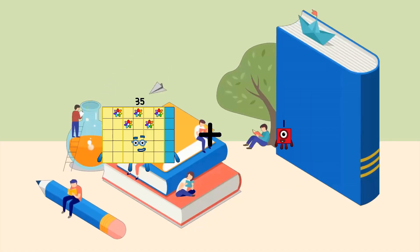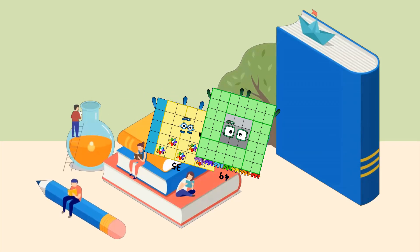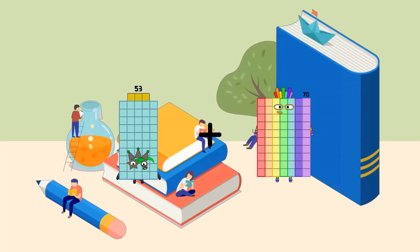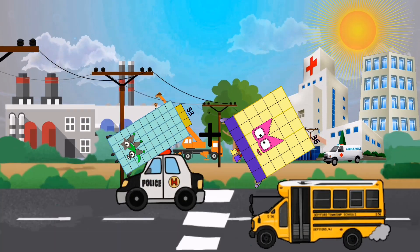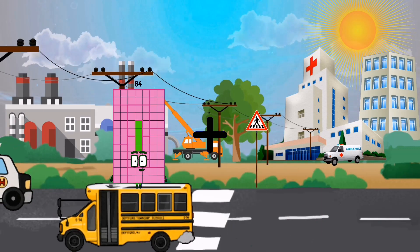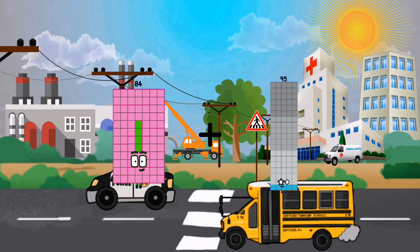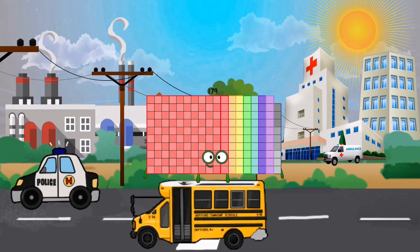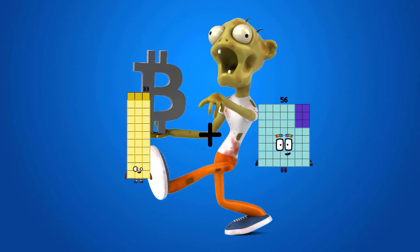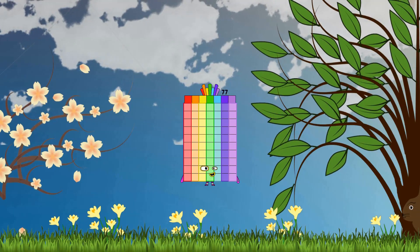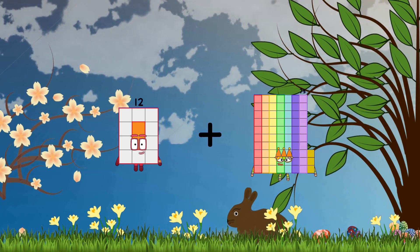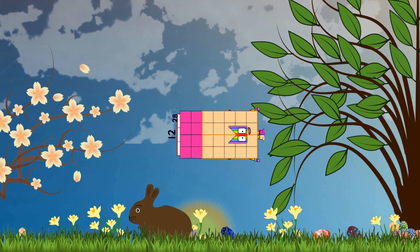35 minus 49 equals 84. Minus 36 equals 89. 84 minus 95 equals 179. 33 minus 44 equals 77. 12 plus 28 equals 40.